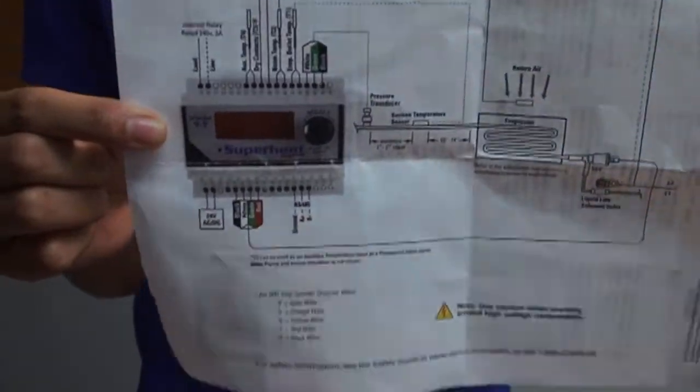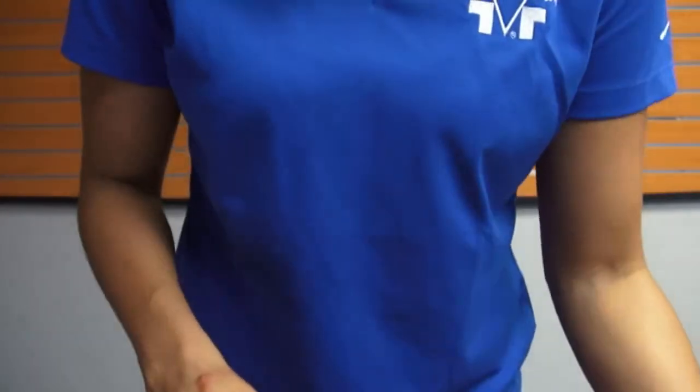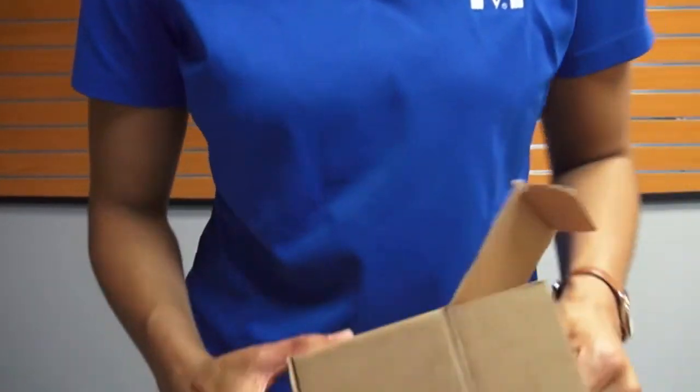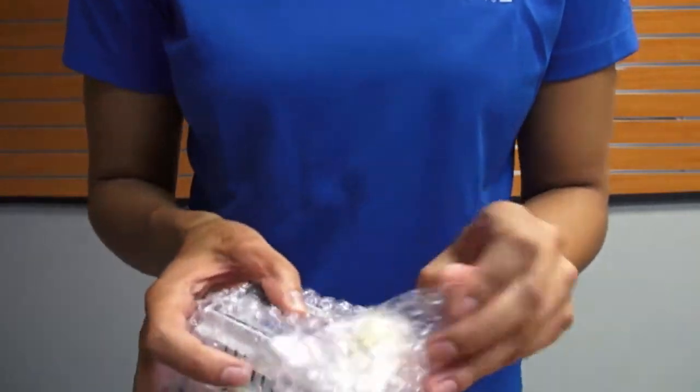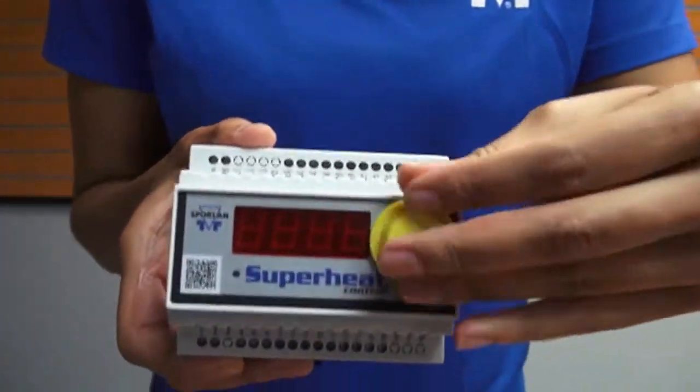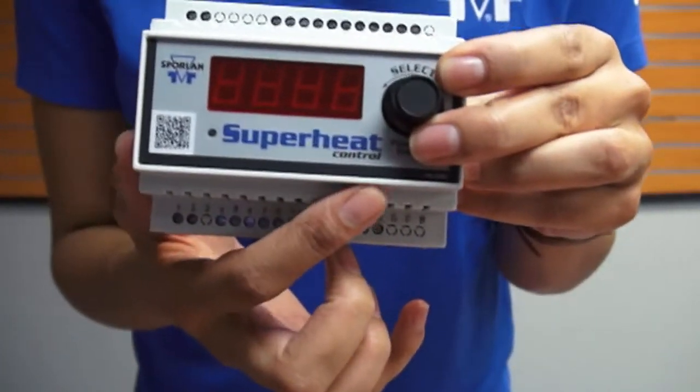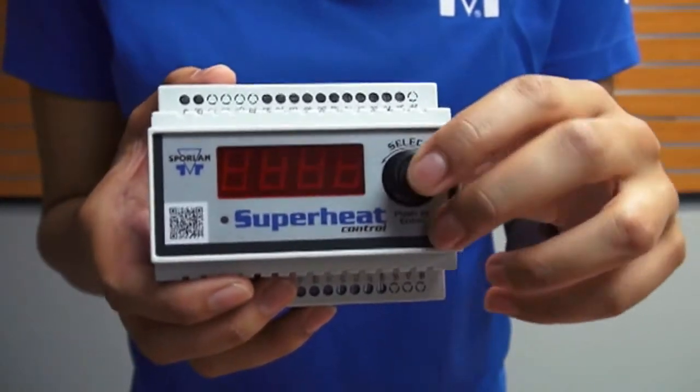On the back is the wiring diagram that I'll be referencing later in the video, so I would keep that close by. The controller itself will look like this. Under the yellow cap is the select knob. When connected to power, the display will flash and you can rotate and select different parameters using the select knob.